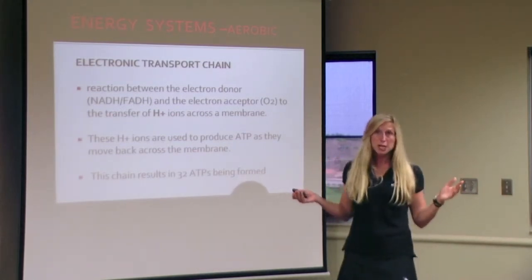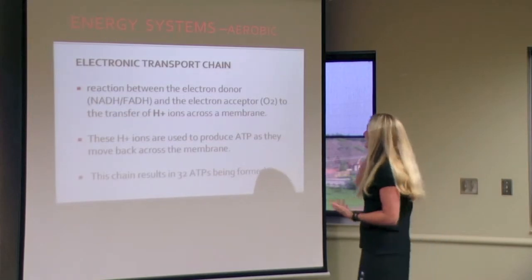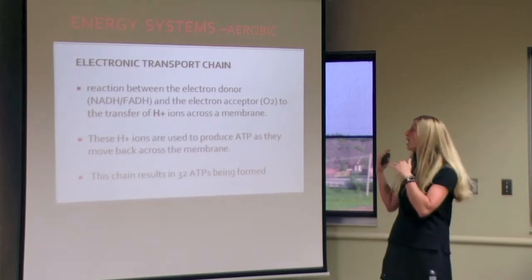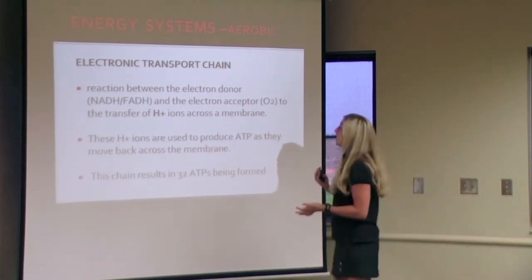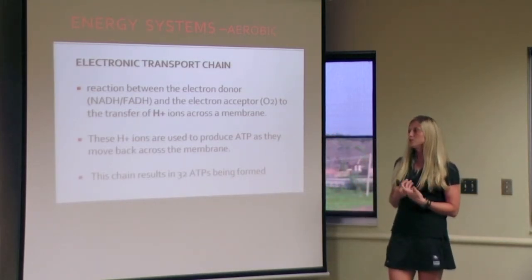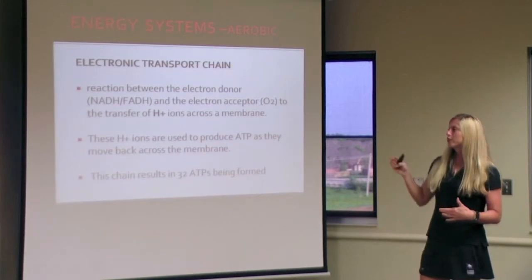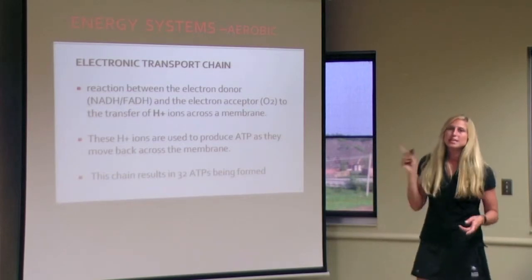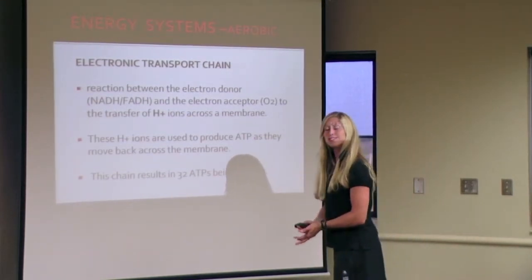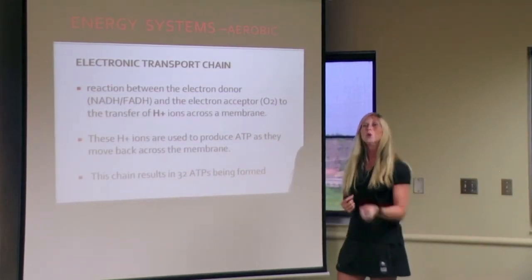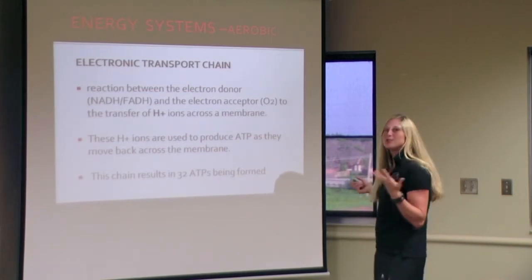The electron transport chain is a reaction between an electron donor and an electron receptor — in this case oxygen — involving the transfer of hydrogen ions. Each time we go through the electron transport chain, 32 ATPs are released. This can keep happening as long as the Krebs cycle continues and oxygen is present. As long as aerobic glycolysis happens and acetyl-CoA is available, the Krebs cycle continues, the electron transport chain continues, and your body will have continuous, massive amounts of energy to rely on.